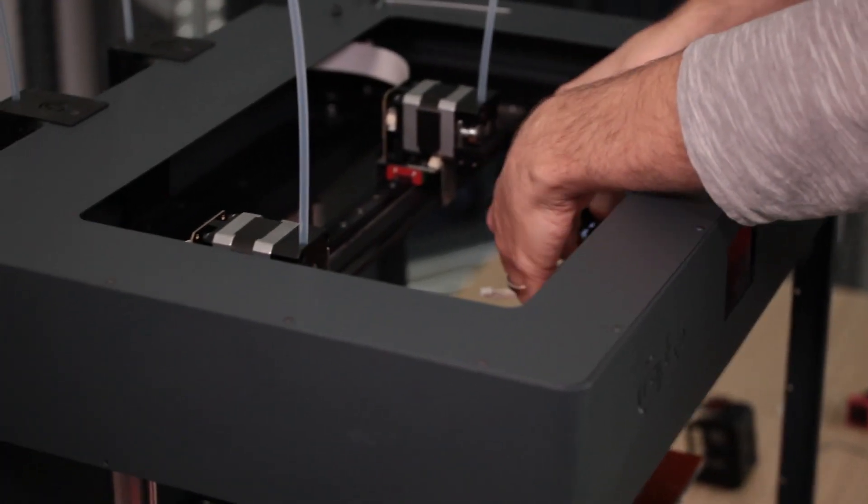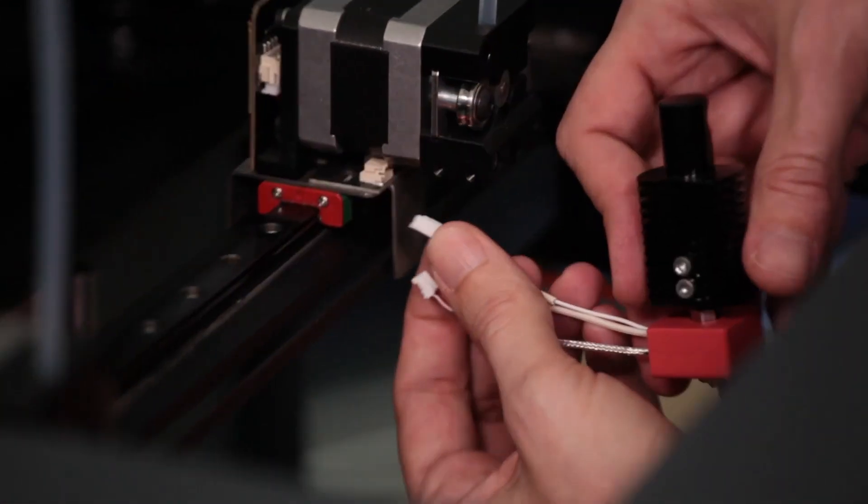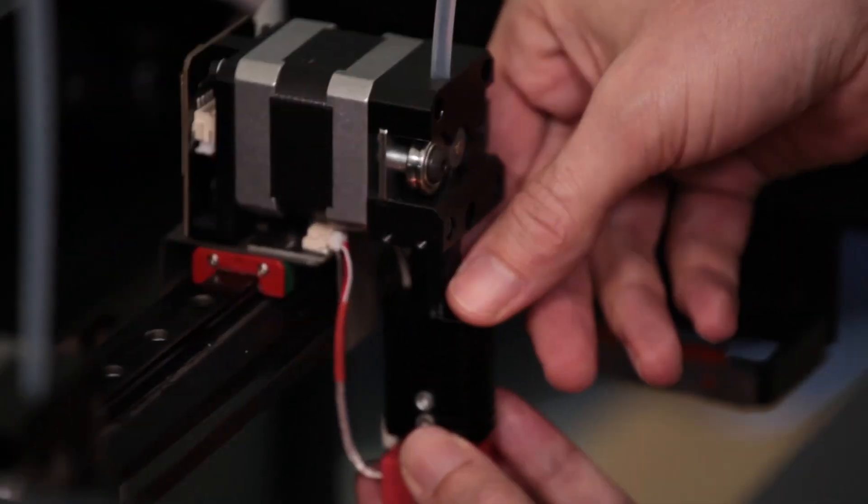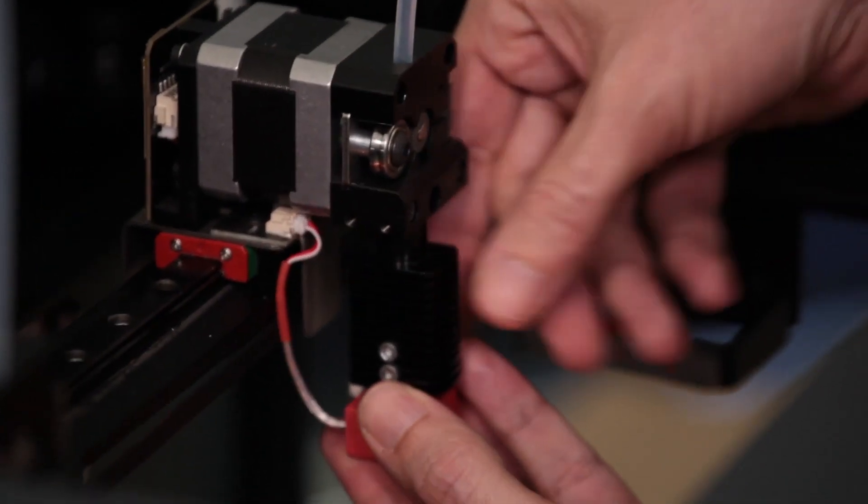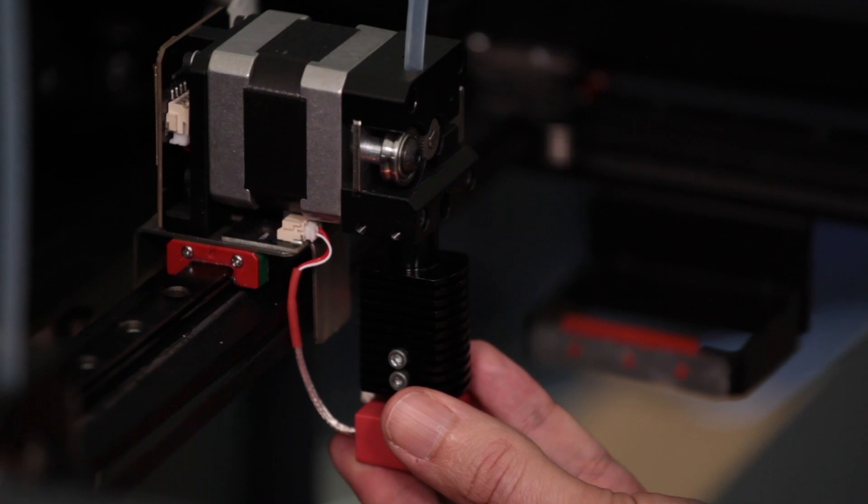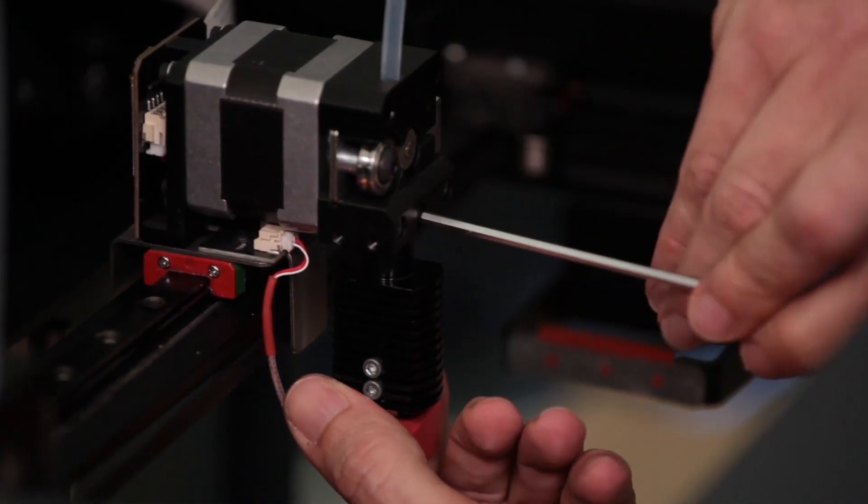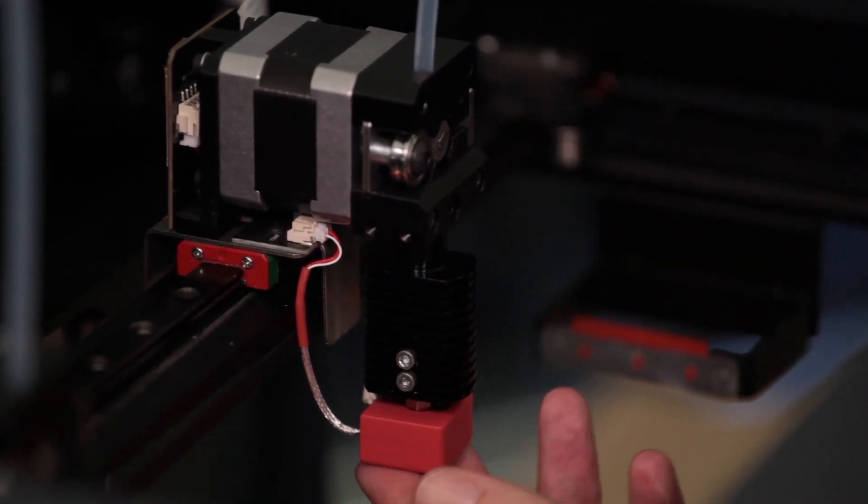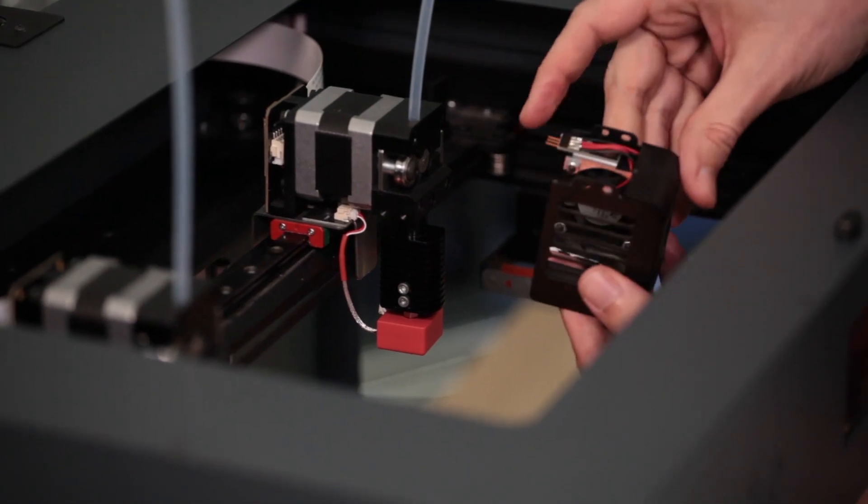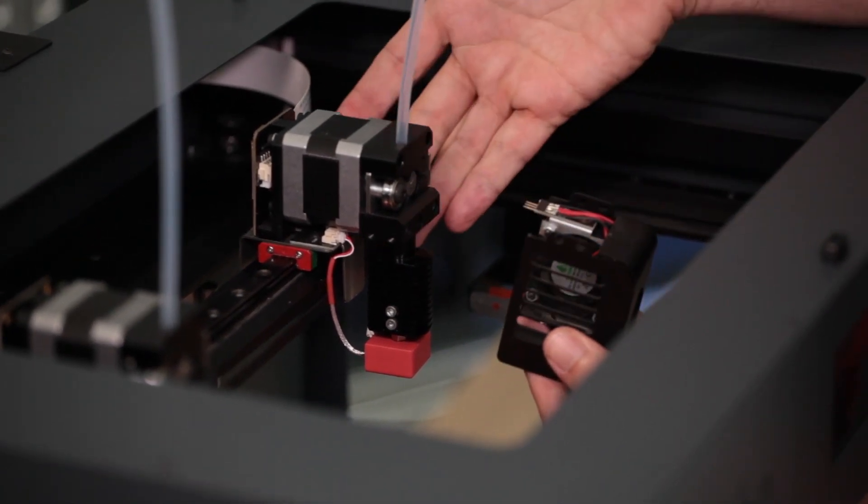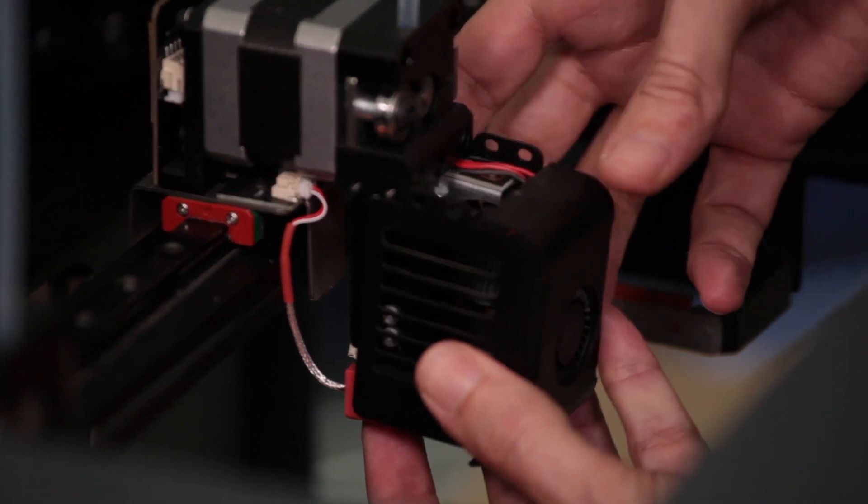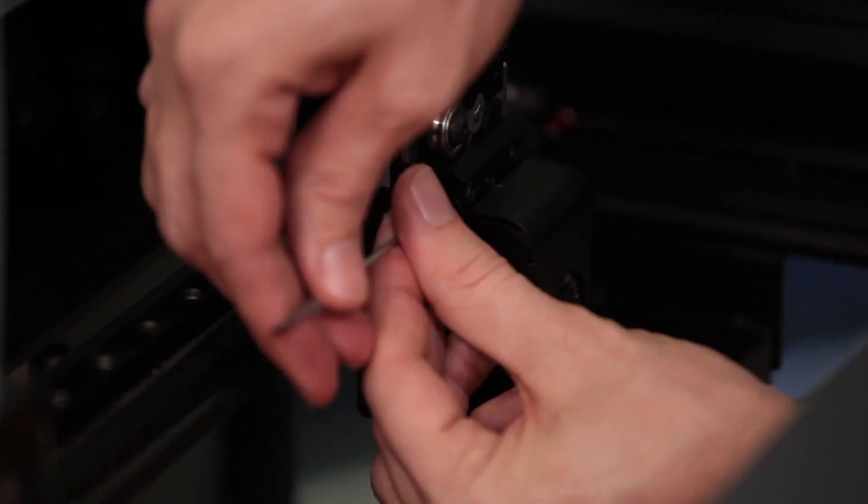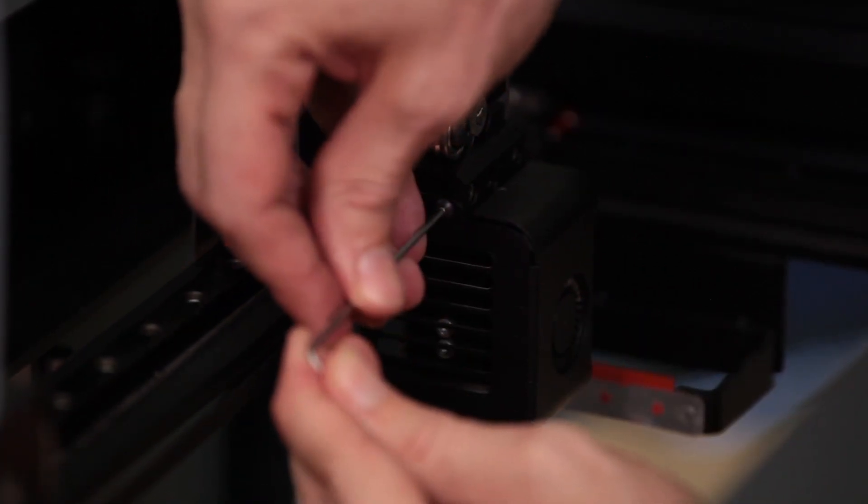First we're going to reconnect the two cables that we disconnected originally. Line up the heat sink hole and put your screw back in. Now that that's nice and tight, we'll add the fan cover back on. You want to be careful to make sure to keep the pins aligned, and simply screw your four screws back into place. And we're done.